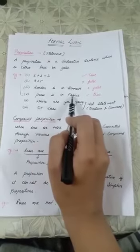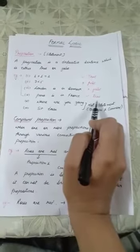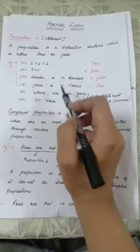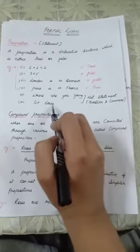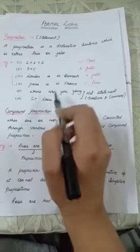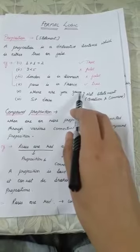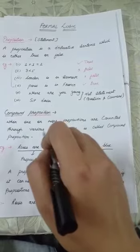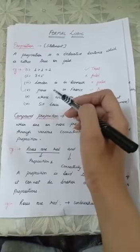Fourth one is Paris is in France? Yes, Paris is in France. That is true. But when you come to the last two statements, 'where are you going?' and 'sit down,' these two are not normal sentences. First one is a question statement and second one is a command type of sentence. This kind of statements are not coming under proposition. Only this kind of statements come under proposition.